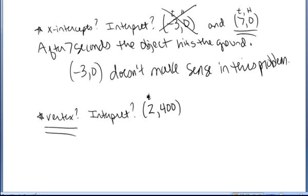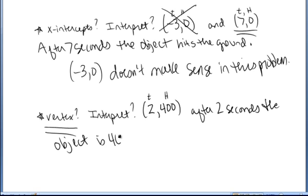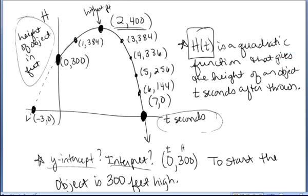And again, it's t comma h. It says after 2 seconds, the object is 400 feet high. And what's important about that point is that that is the highest that the object gets. You see on the graph, the vertex is the highest point.